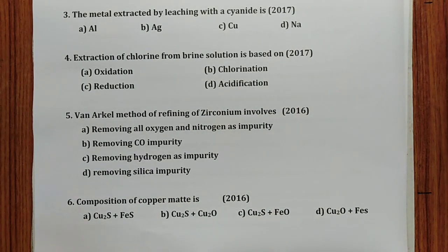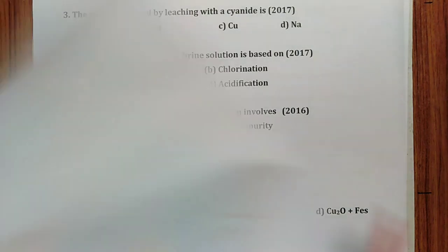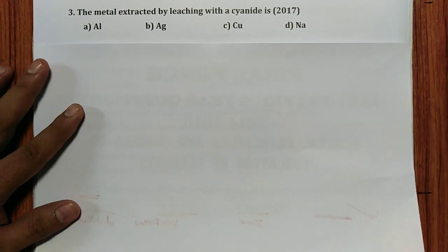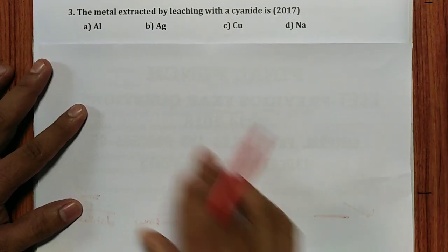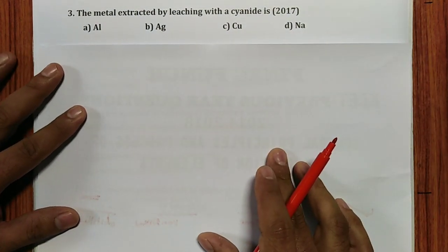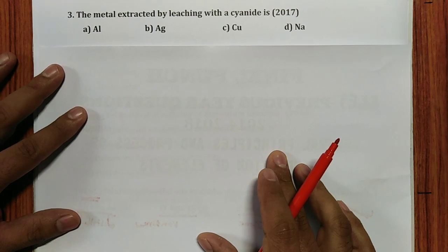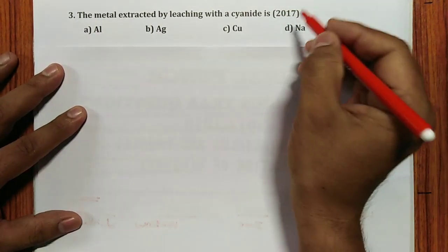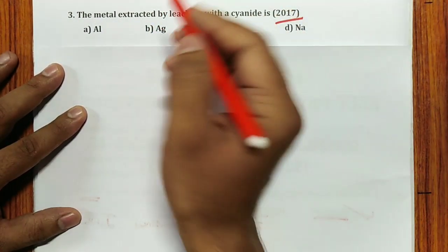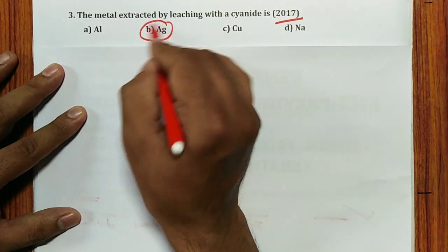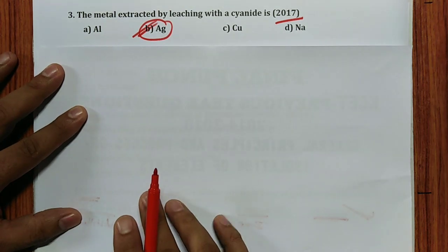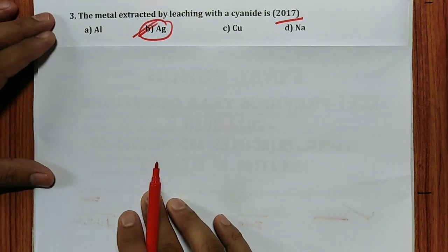Question 3 (2017): The metal extracted by leaching with cyanide. The answer is silver. Cyanide process is used for silver and gold.